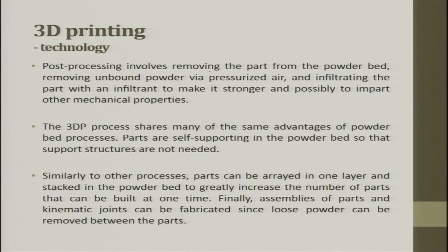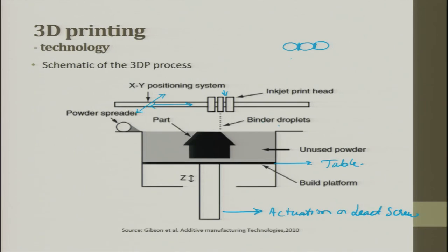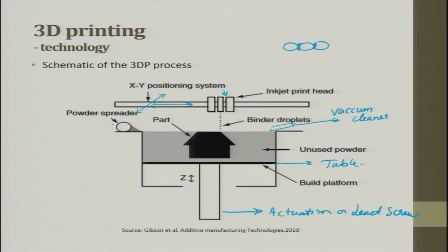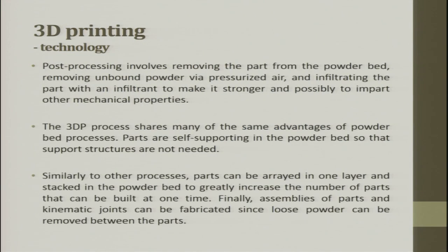After this, you remove the part and can put it through post-processing such as annealing. This annealing temperature has to be relative to that of the binder used. It will be kept for annealing so that the binder properly melts and adheres with the powder. Post processing involves removing the part from the powder bed and removing unbonded powder via pressurized air — essentially a vacuum cleaner that sucks all the loose powders, which are then reused and fed back into the powder spreader tank.